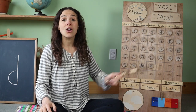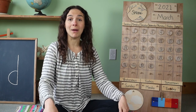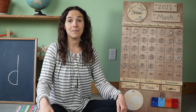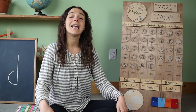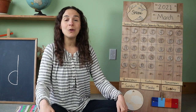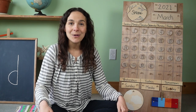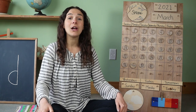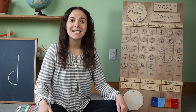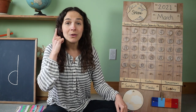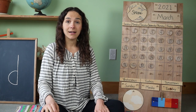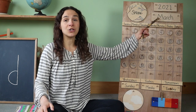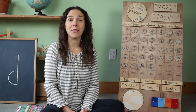The month of March is almost over, and do you know what month will come next? Listen carefully to the words in this next song. January, February, March and April, May and June, July and August, September, October, November, December — 12 months in a year. Did you hear the month that comes after March? April, that's right. After the month of March is over, we will have a brand new month called April.